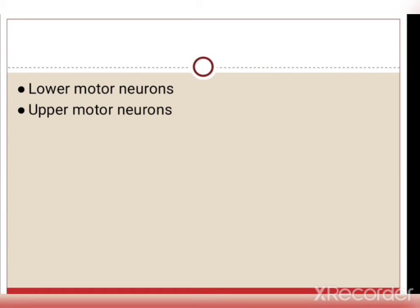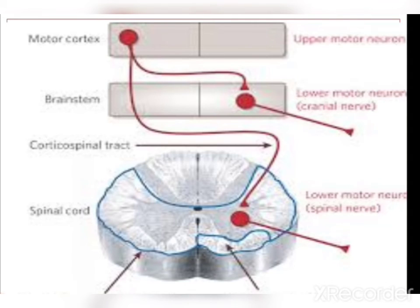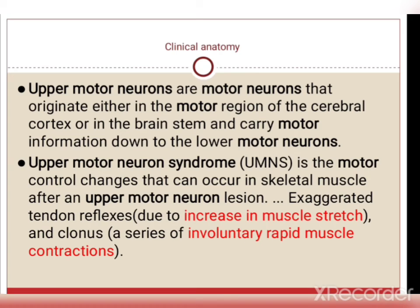Upper motor neurons lie in the motor cortex; lower motor neurons lie in the brainstem or spinal cord. Upper motor neurons originate in the motor region of the cerebral cortex or brainstem and carry motor information down to lower motor neurons. Upper motor neuron syndrome refers to motor control changes in skeletal muscle after an upper motor neuron lesion — injury causes exaggerated tendon reflexes due to increased muscle stretch, and clonus, which is a series of involuntary rapid muscle contractions (not under voluntary control).